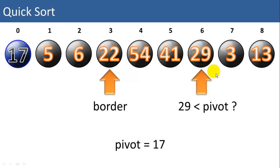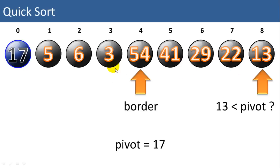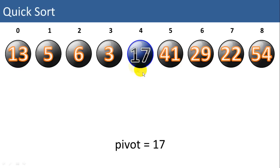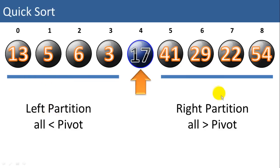Now we're going to advance both pointers. Is 29 smaller than the pivot? No. Is 3 smaller than the pivot? Yes, so we'll swap 3 with the pivot. Now we advance both pointers again. We compare 13 to the pivot — it is smaller, so we swap those. And we're done. Now we're going to swap 17 into where our border value was, the 13. Now we can see that all the items to the left of 17 are smaller than the pivot, and all the items to the right of the pivot are greater than the pivot. This is a recursive function, so we're going to repeatedly call quicksort on the left partition and on the right partition until the list is fully sorted.